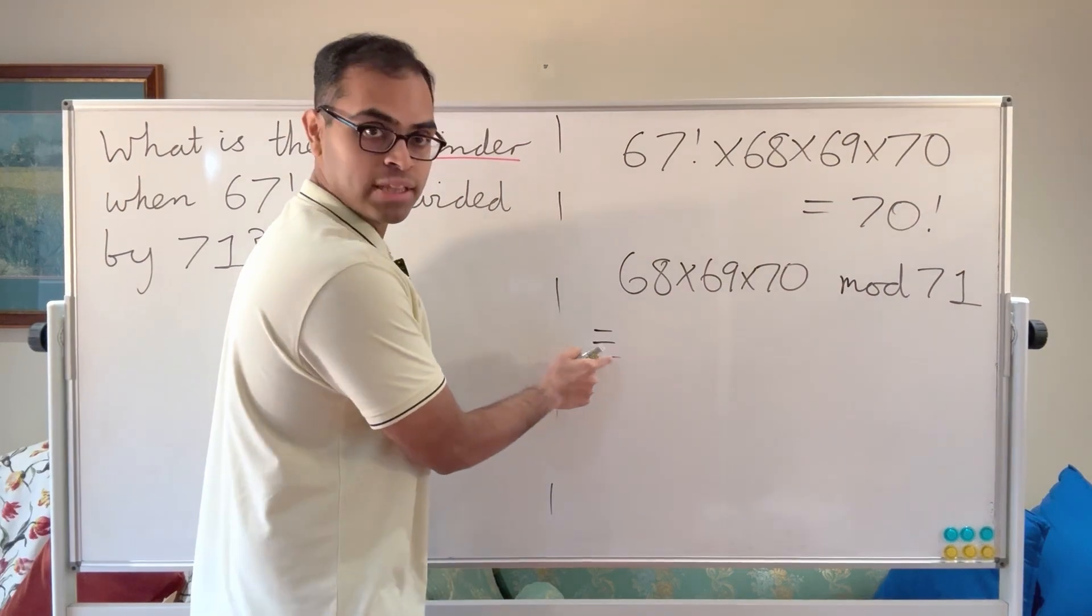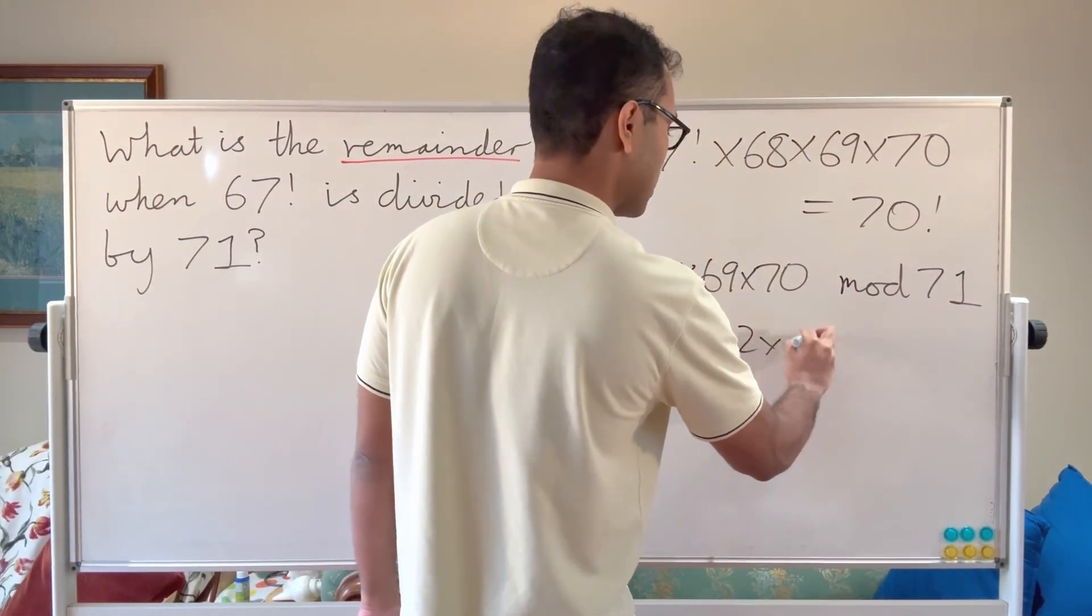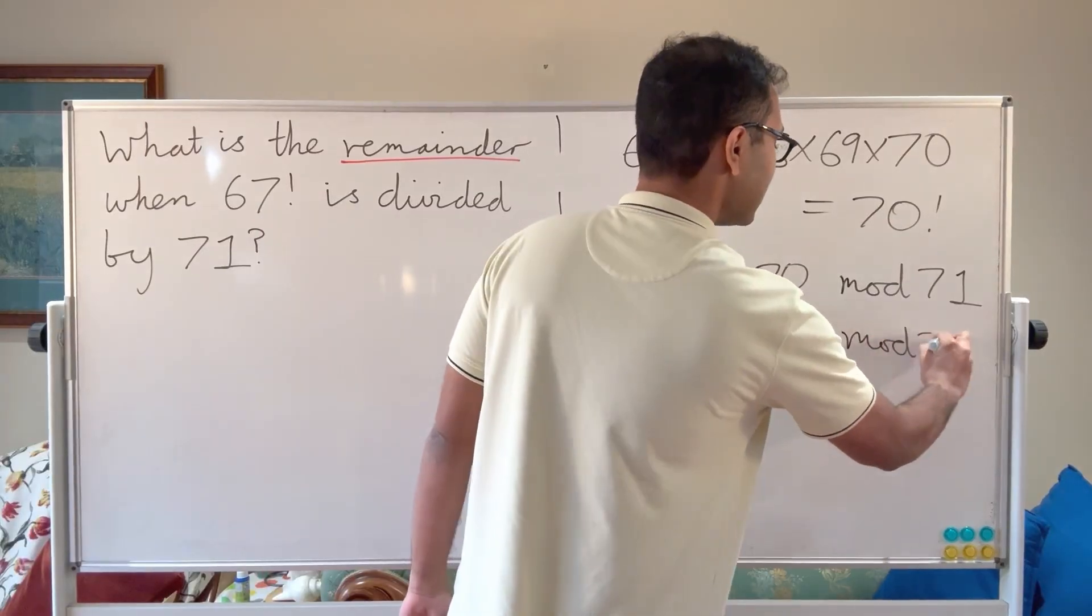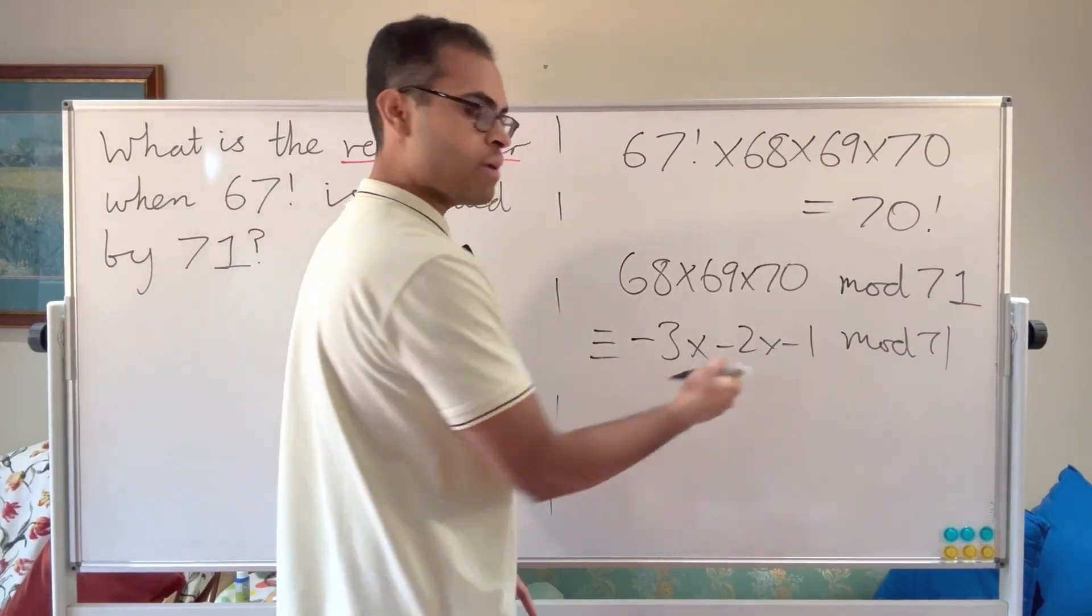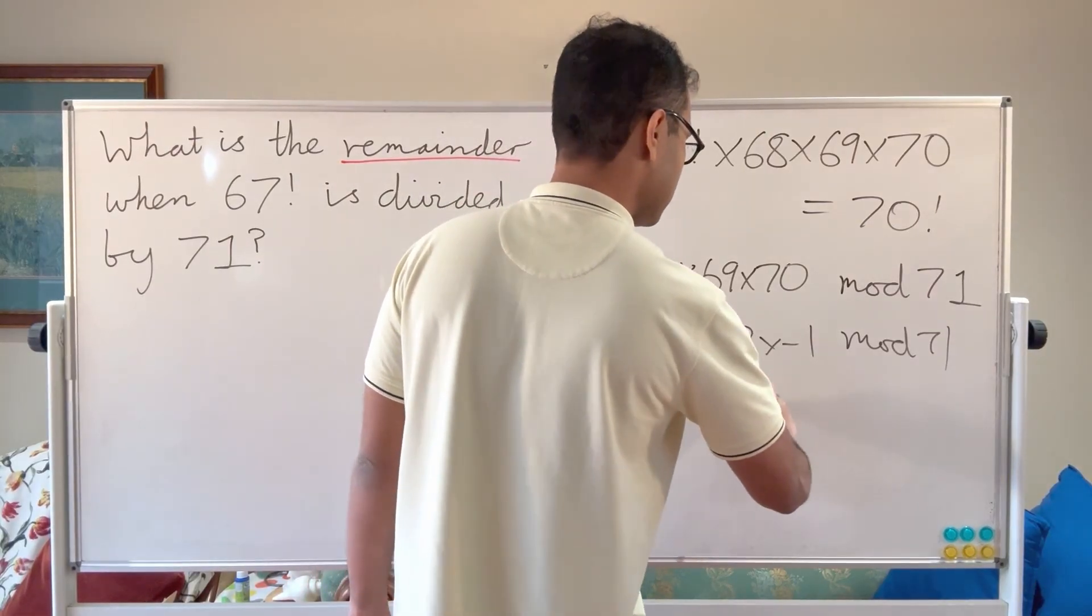This is going to be congruent—this is the three lines sign—to minus 3 times minus 2 times minus 1 mod 71. And that's going to be congruent to minus 6. So that's congruent to minus 6 mod 71.